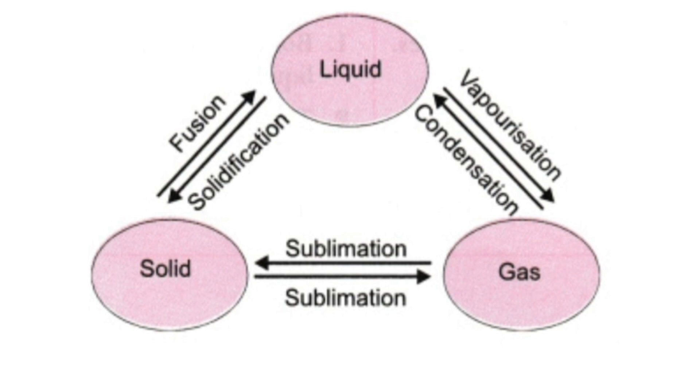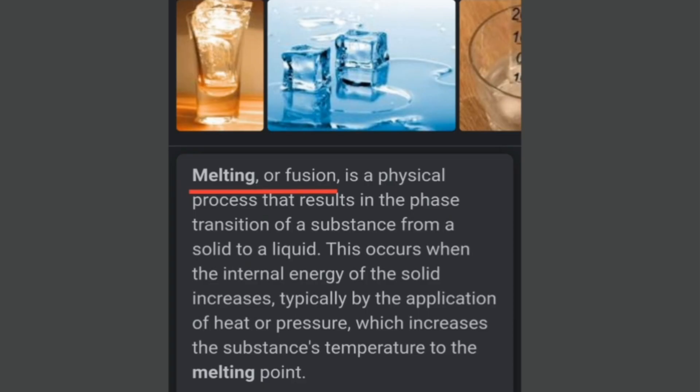We will study these changes in detail. Melting or fusion is a physical process that results in the phase transition of a substance from a solid to a liquid. This occurs when the internal energy of the solid increases, typically by the application of heat or pressure, which increases the substance's temperature to the melting point.